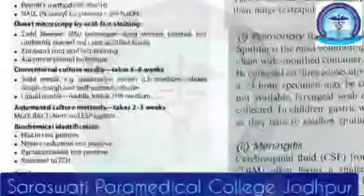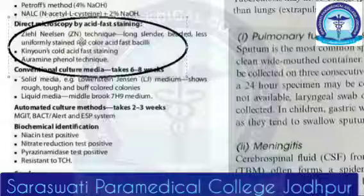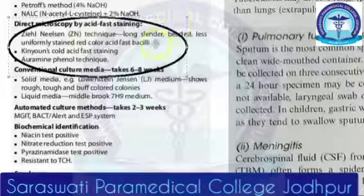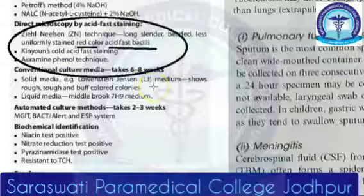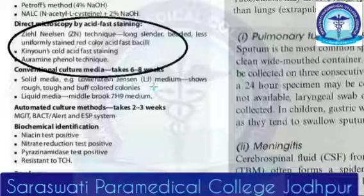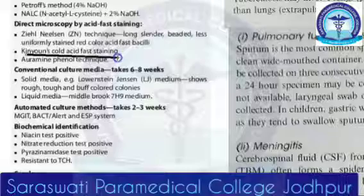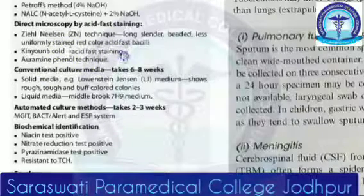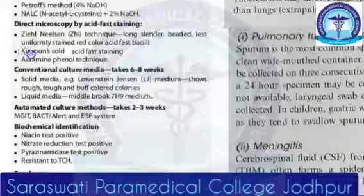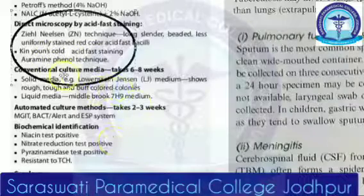After you concentrate the specimen, you have to do direct microscopy using the Ziehl-Neelsen technique. You will see long, slender, beaded bacteria which are acid-fast bacilli — they should appear red in colour. You can also use Kinyon's cold acid-fast staining, which is the same as Ziehl-Neelsen staining but without heating.